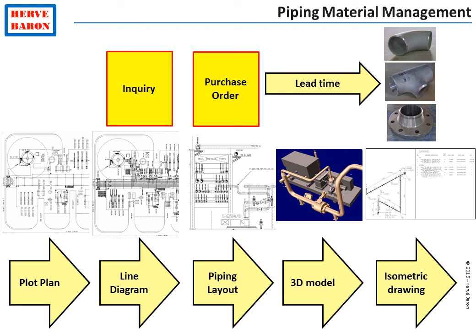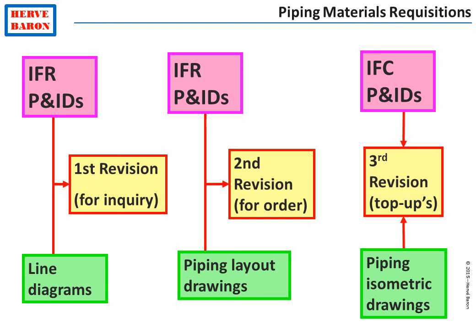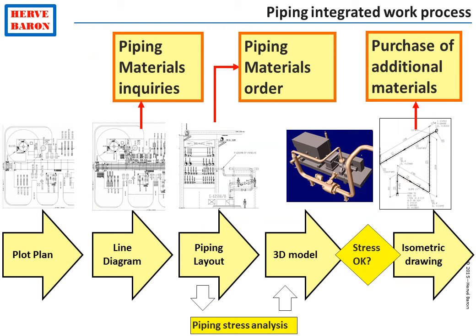In fact, an even earlier estimate of required quantities is needed to issue inquiries to potential piping materials vendors. This earlier estimate — required two to three months before the purchase order, in order to have time to receive bids from the vendors and select the most competitive vendor — is done from the first issue of the P&IDs as well as from the piping line diagrams. This synoptic shows the three revisions of the piping materials requisitions: the first one for inquiry, the second one for order where quantities are committed, and the third one and subsequent ones for ordering additional materials or top-ups.